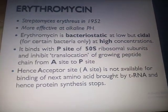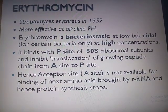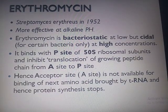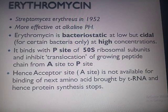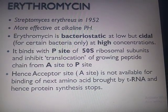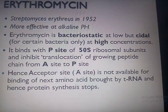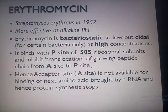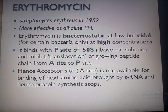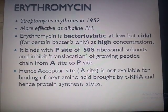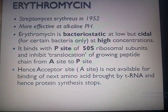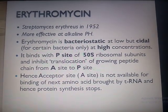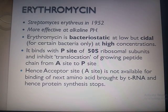Erythromycin is obtained from Streptomyces erythreus in 1952, so it is a natural antibiotic. It is more effective at alkaline pH. It is a bacteriostatic drug at low concentration, but bactericidal at high concentration for certain bacteria only, not all.